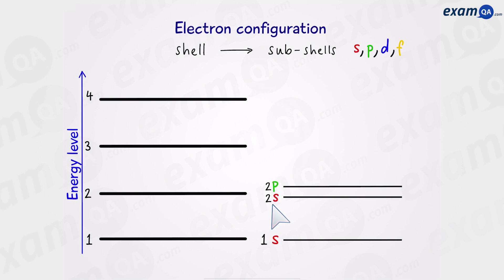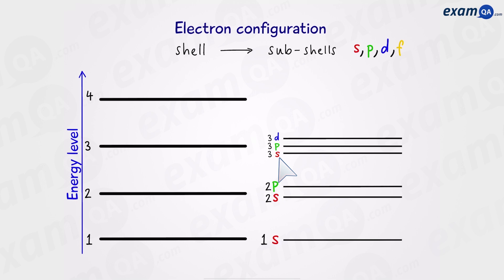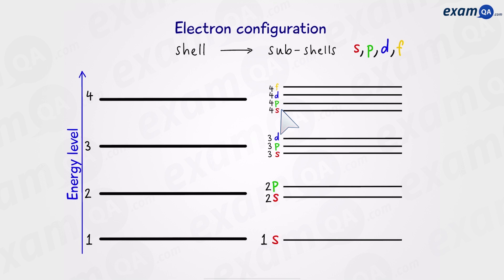The second shell is broken down into an S and a P subshell. The third shell can hold more electrons, so we have an S, a P and a D subshell. And finally the fourth shell, because it's the largest out of these four, can hold up to four subshells: S, P, D and F. Just remember that shells are broken down into subshells, and depending on how many electrons a particular shell can hold, it will have that many subshells. Larger shells can hold more subshells, just like a big town has more roads.